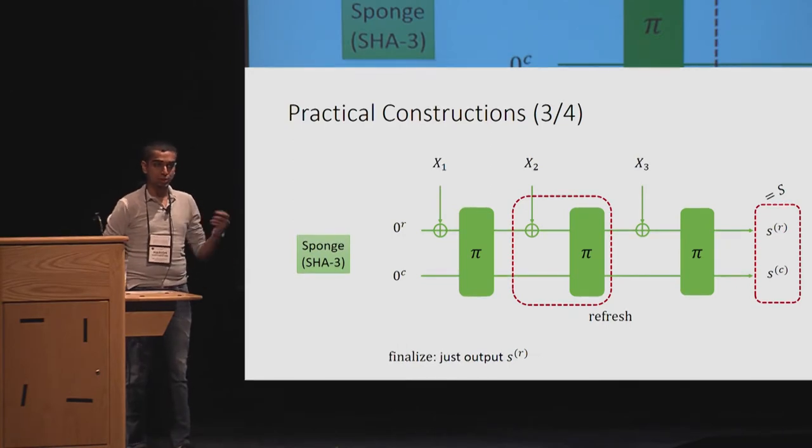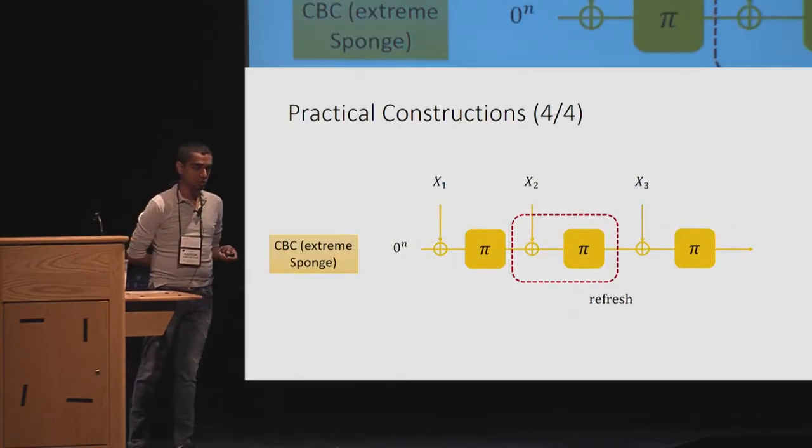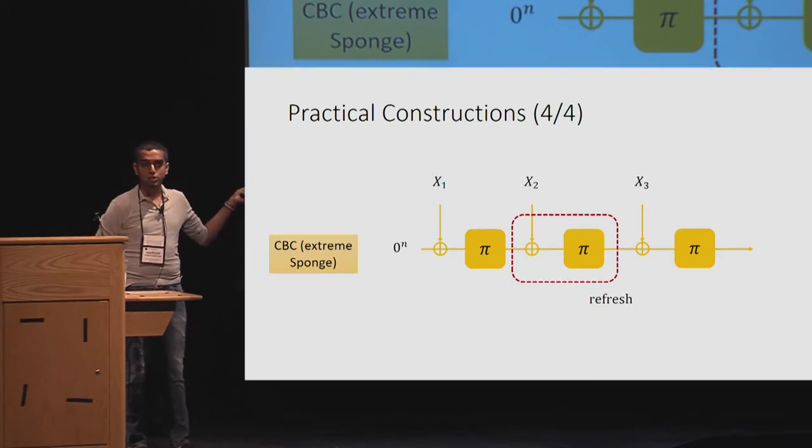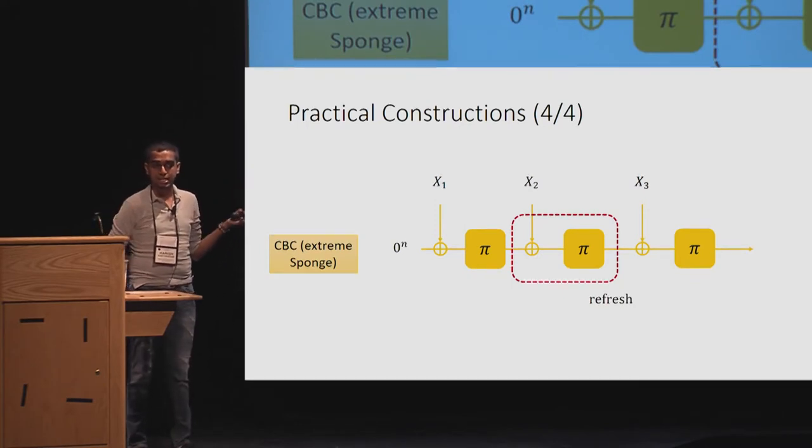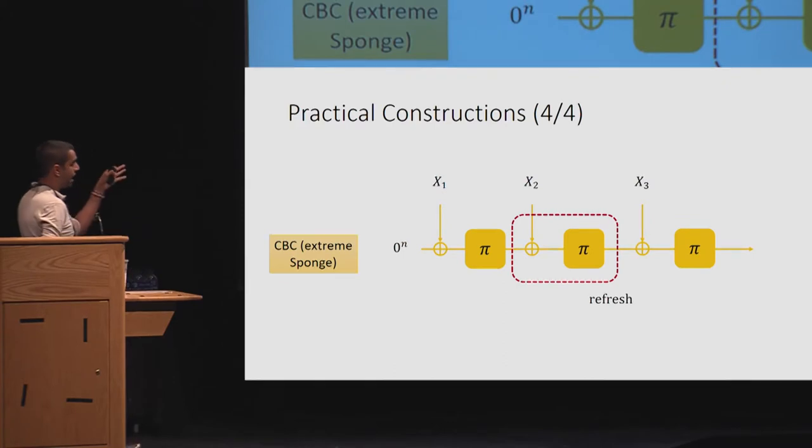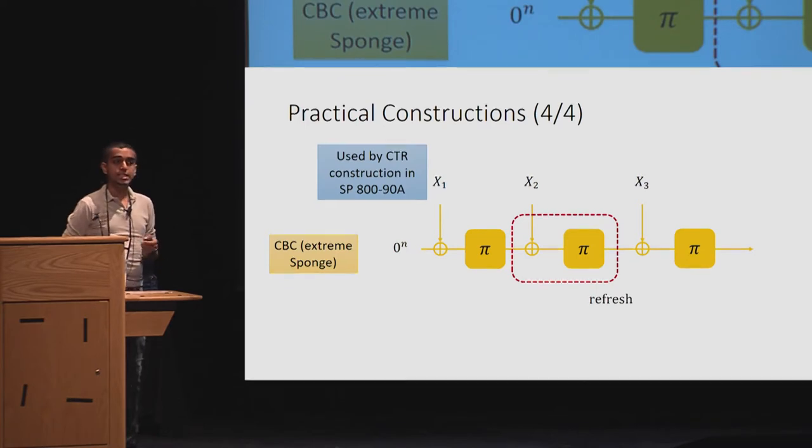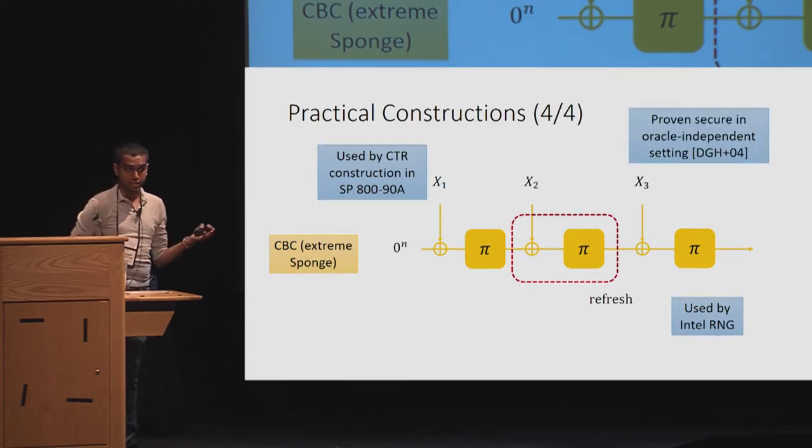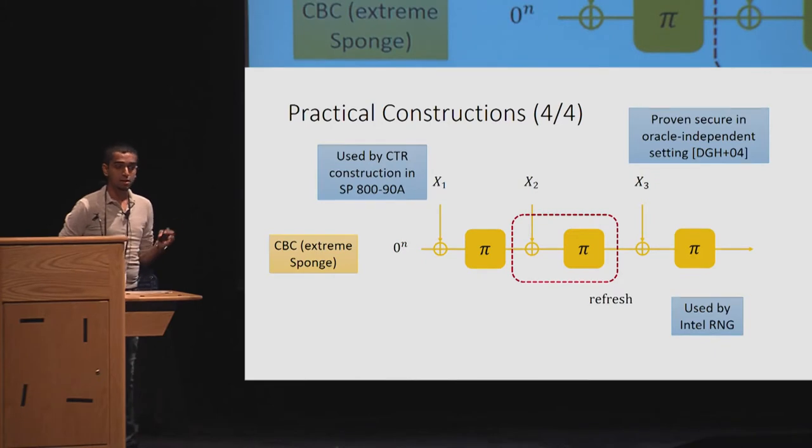And we can take sponge to an extreme form, which is called this CBC construction. A version of it was proved secure in a seeded setting by Ghazi and Tesaro in 2016. Let's look at CBC in particular. Here the entire state is exorbed with the input. So this is the refresh function. It is used in the CTR construction in SP-890A. It is used by Intel RNG. It's proven secure in the Oracle independent setting by Dodis and others.